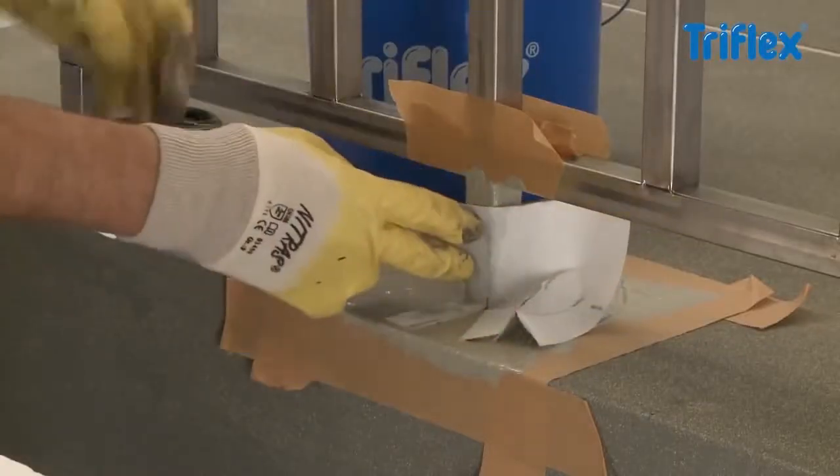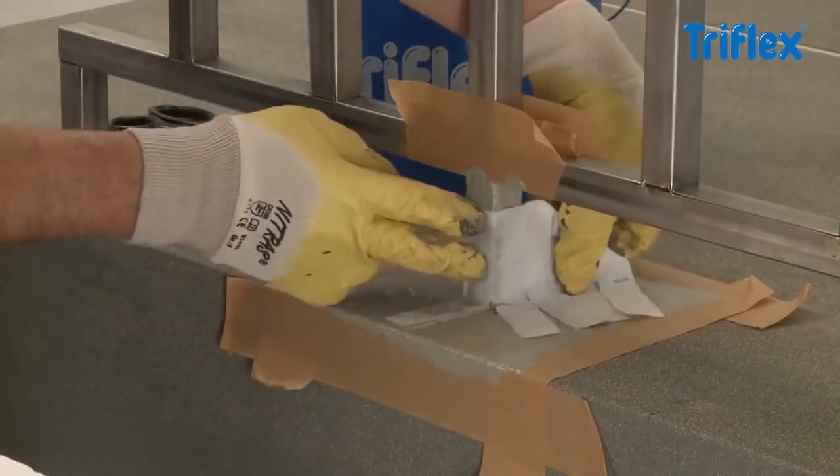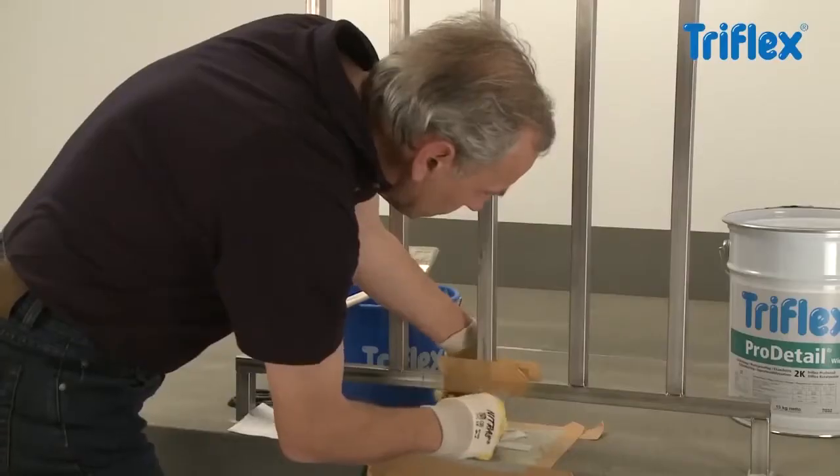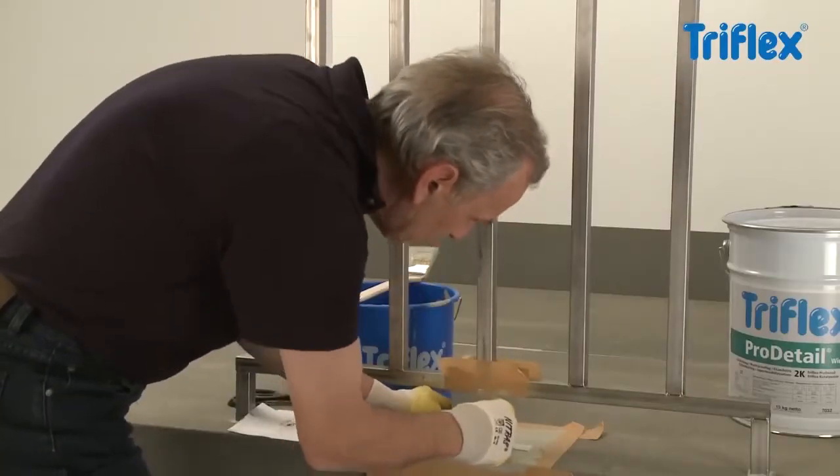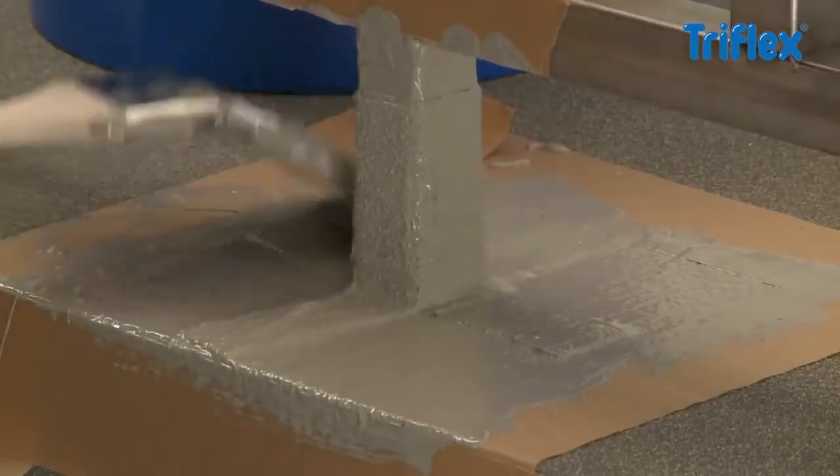Now press the post section of fleece into the wet resin, making sure there are no trapped air bubbles. Apply resin again to the fleece overlap to ensure that it is thoroughly saturated.